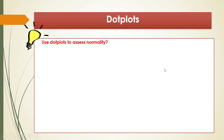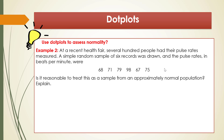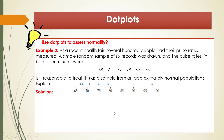Another example of using a dot plot to assess normality — Example 2. At a recent health fair, several hundred people had their pulse rates measured. A random sample of six records was drawn, and the pulse rates in beats per minute were 68, 71, 79, 98, 67, and 75. Is it reasonable to treat this as a sample from an approximately normal population? We construct the dot plot, and when we look at it, we see that there is one odd number that stays away from the majority — this is evidence that the sample has an outlier.